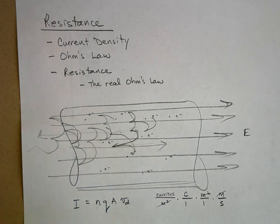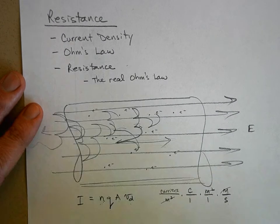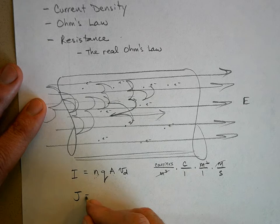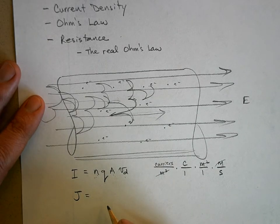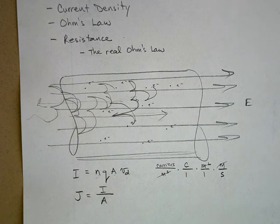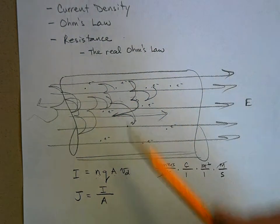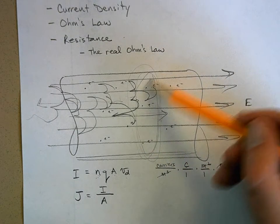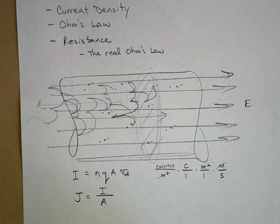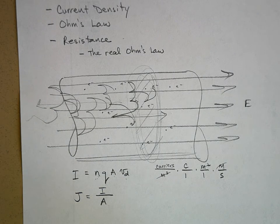Now we're going to define a new quantity that we're going to use this one and only one time. We divide both sides by the area, and we get this new thing J — called the current density. The current density is the current per unit area: how much current you have divided by the cross-sectional area. How crowded the current is in a given cross-section. It has units of amps per square meter.